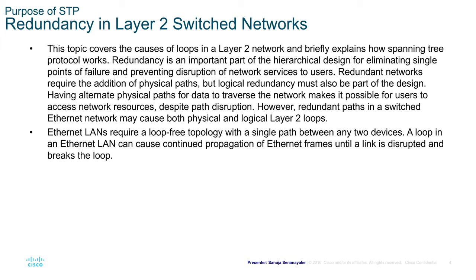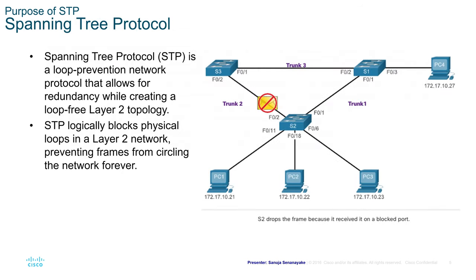This is the core issue: we do need redundancy built into our network, but Ethernet LANs require a loop-free topology, which means you need to have a single path between any two devices. Spanning Tree Protocol, or STP, is a loop prevention network protocol that allows for redundancy while creating a loop-free Layer 2 topology. If you want to create redundancy, you need multiple paths to a destination, but that may result in loops. STP is a protocol that allows us to create redundancy while removing looping issues in a Layer 2 topology.